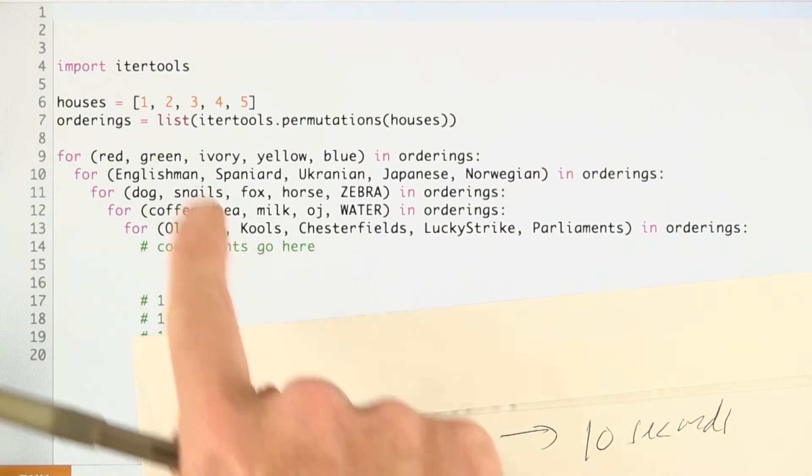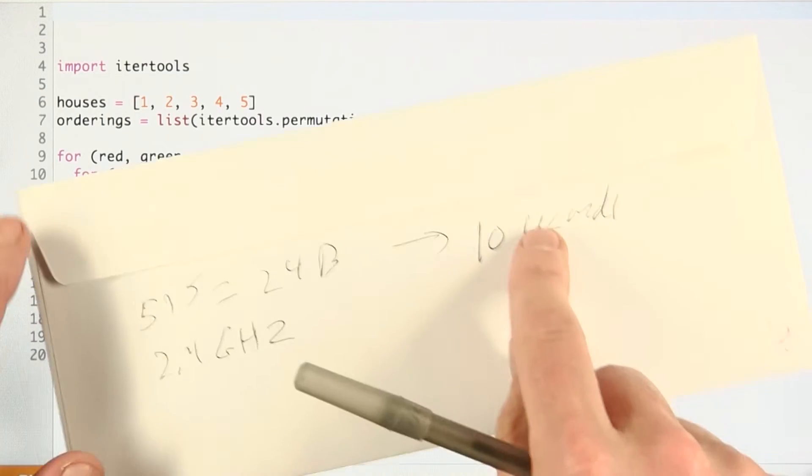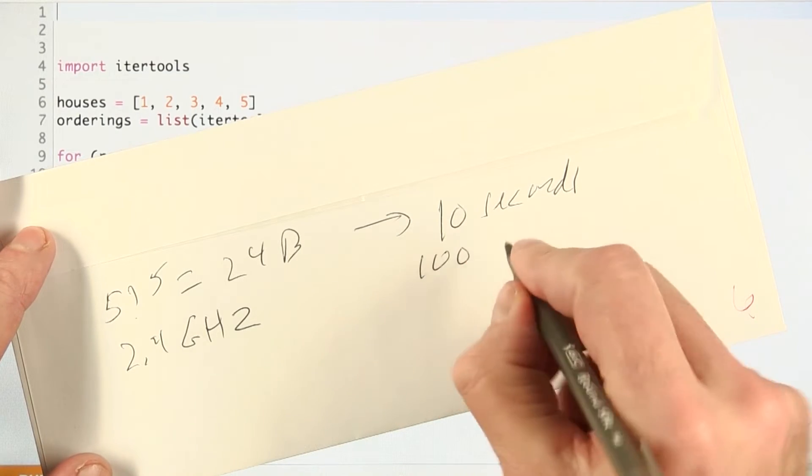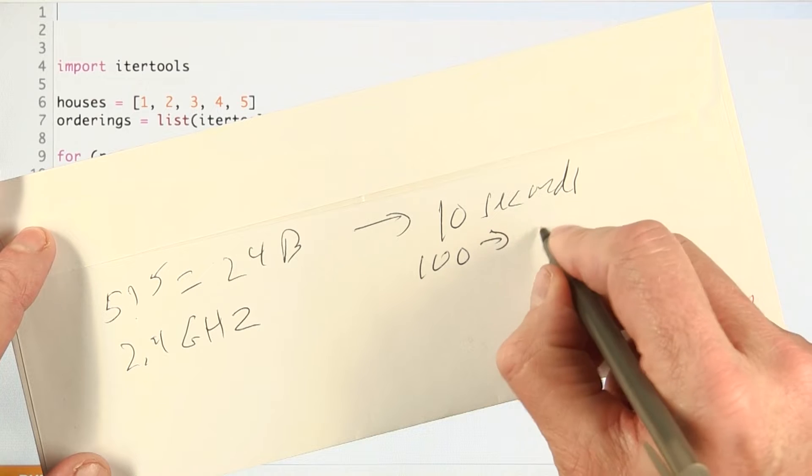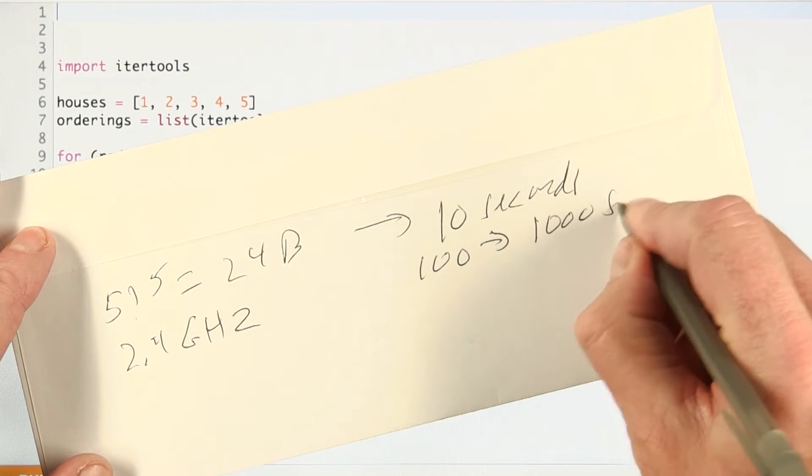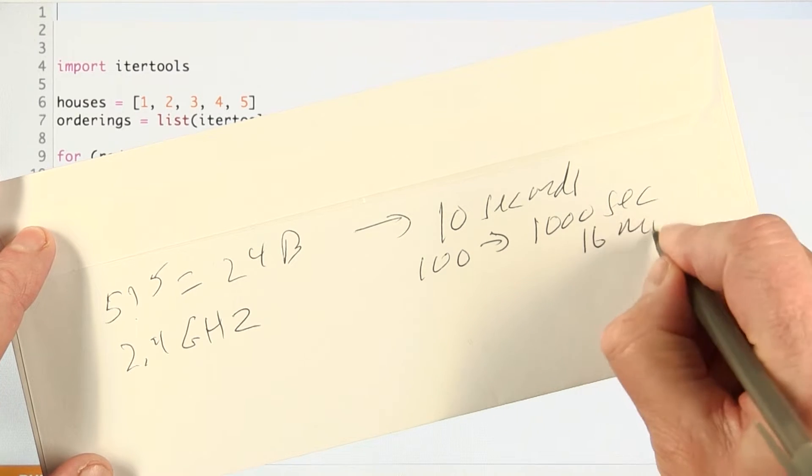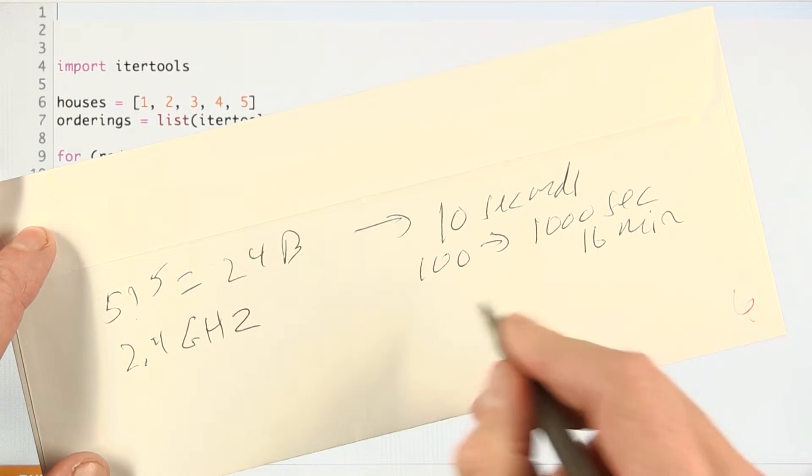But of course, that's ridiculous. You can't do all of that in one instruction. If it was 100 instructions, then that would mean it would be 1,000 seconds, which is about 16 minutes, but that seems too little.